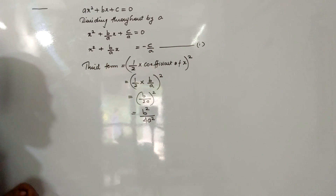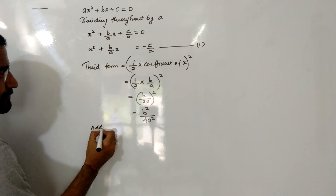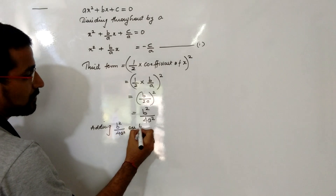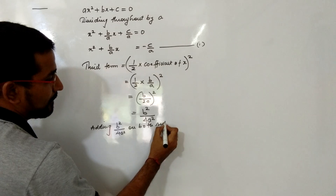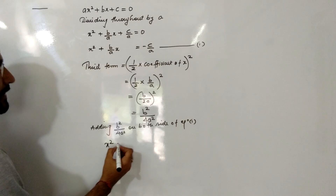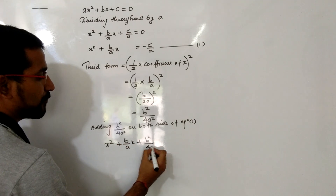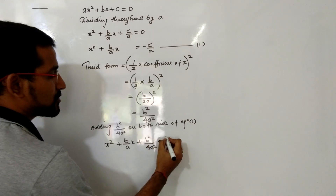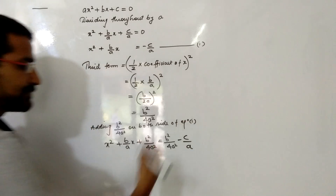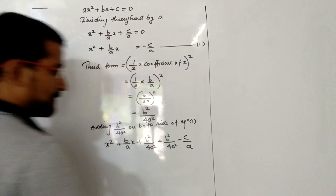Now we will add b²/4a² on both sides of equation 1. So the equation becomes x² + (b/a)x + b²/4a² = b²/4a² − c/a.